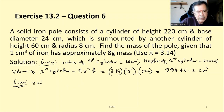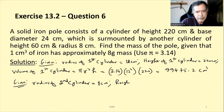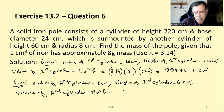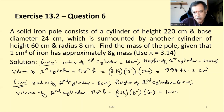Radius of second cylinder = 8 cm, height = 60 cm. Volume of second cylinder = π × r² × h = 3.14 × 8² × 60 = 12057.6 cm³.